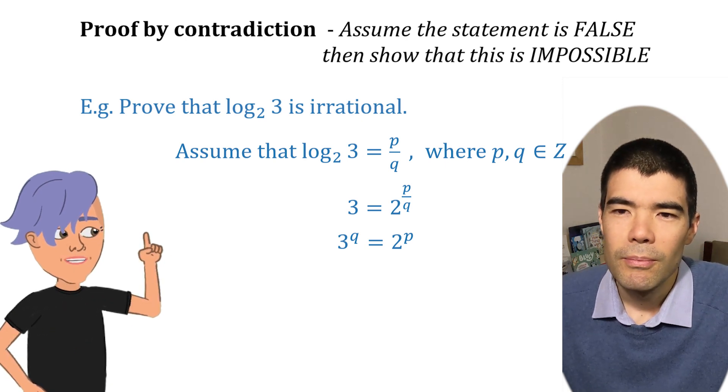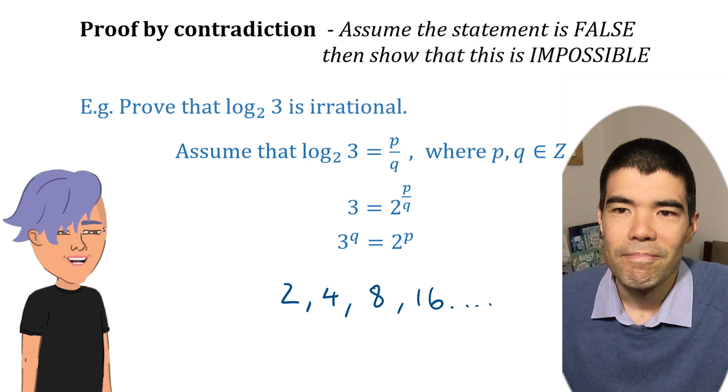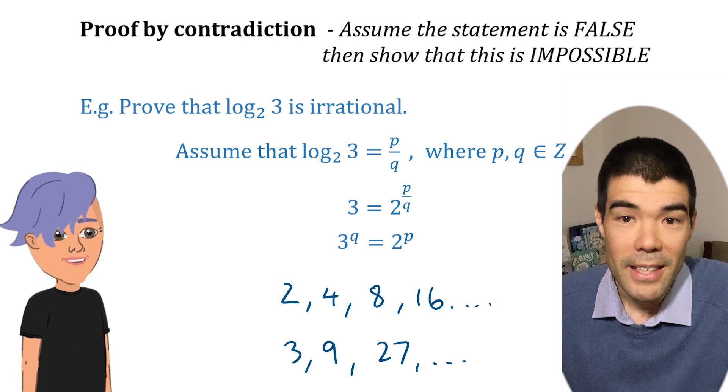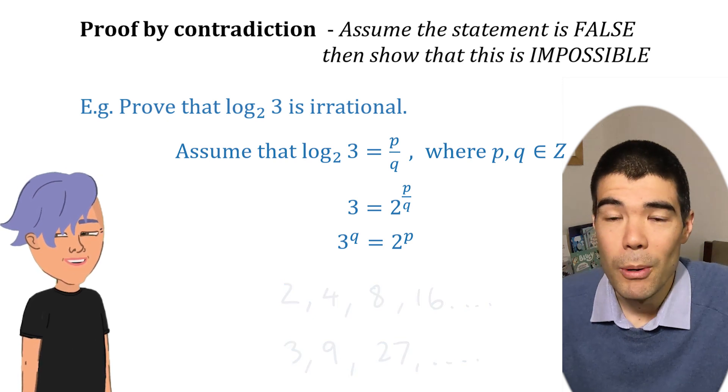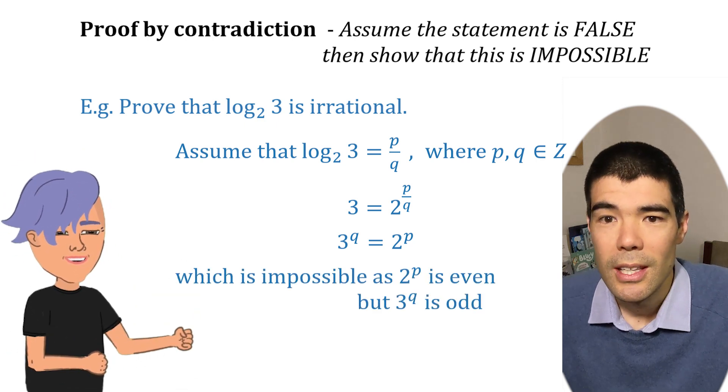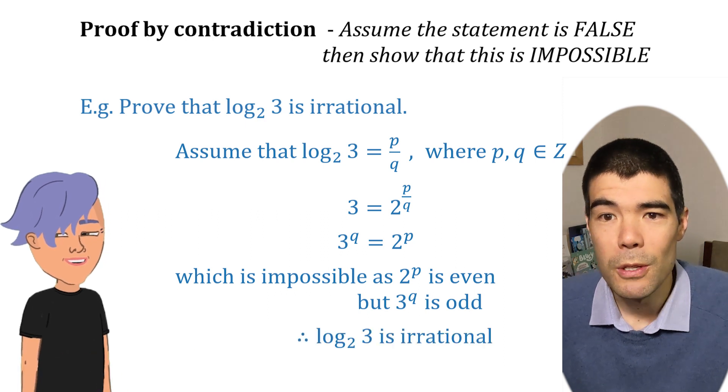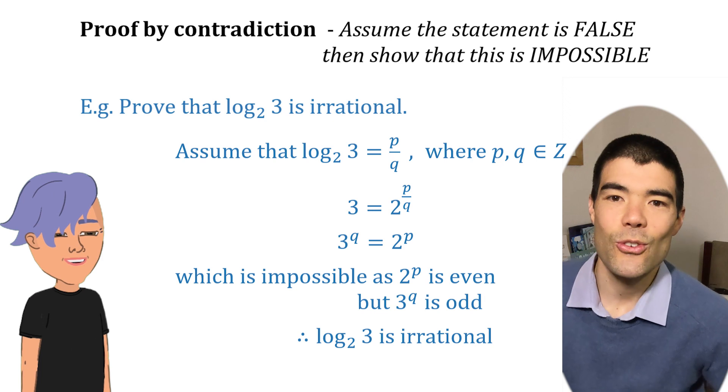Can you see why? Oh, I think so. Powers of two are like two, four, eight, sixteen. They're always even. And powers of three, like three, nine, twenty-seven, are always odd. Except if the powers of both zero, and that's not possible either. So we have a contradiction. And it proves that the assumption we started with must be false, which proves that log base two of three is irrational.